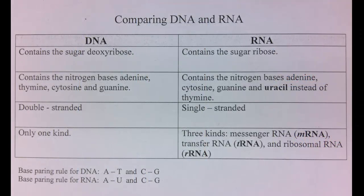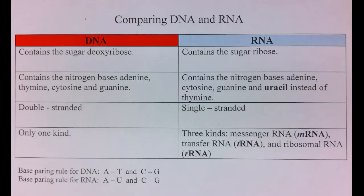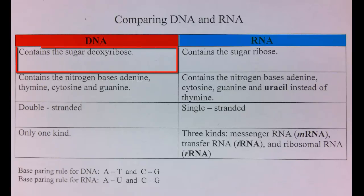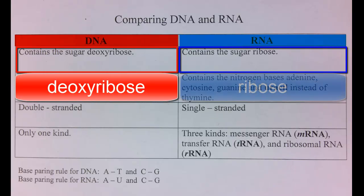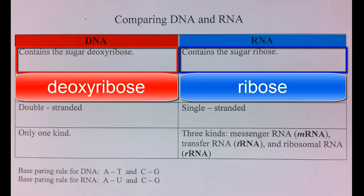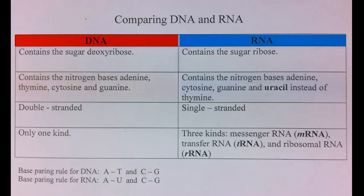The sugar is different between a DNA nucleotide and an RNA nucleotide. DNA contains the sugar deoxyribose and RNA contains the sugar ribose.